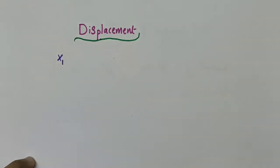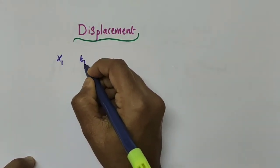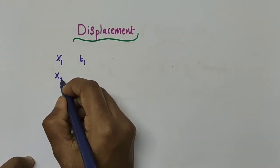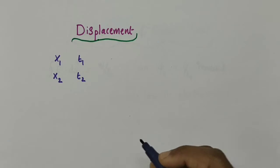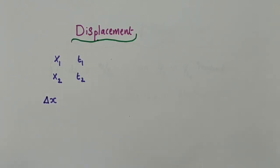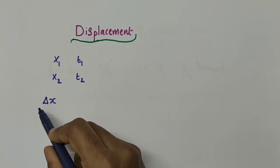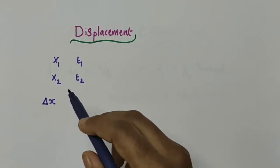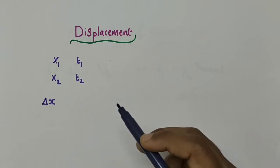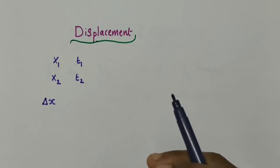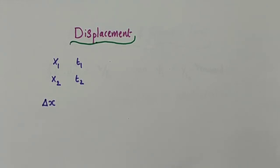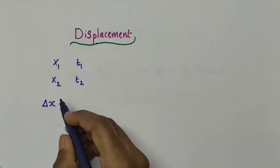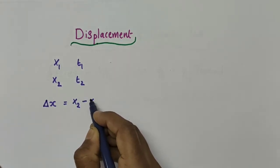Let x1 be the position of an object at time t1, and let x2 be the position of an object at time t2. Then the displacement of this object can be written as delta x. The triangle symbol is a Greek letter called delta, and we use it to denote a change in a quantity. So displacement — the shortest distance between the initial and final positions — is a change in position, and is written as delta x = x2 minus x1.